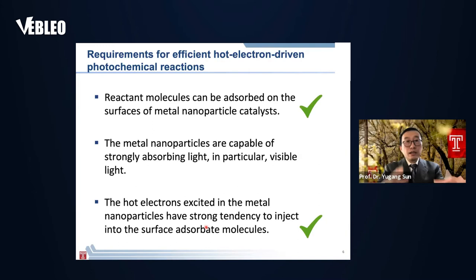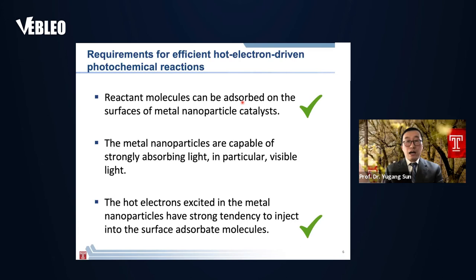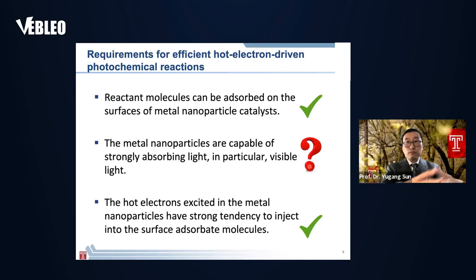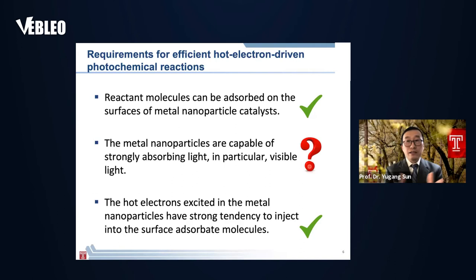According to our previous discussion, the quantum-size metal nanoparticles can fulfill the first and third requirements, since we can choose any metal nanoparticle — many transition metal nanoparticles are good catalysts with good adsorption properties for interesting catalytic reactions, and the quantum size benefits hot electron injection. But the challenge is that when we reduce the particle size to the 2 to 10 nanometer region, the light absorption power in the metal nanoparticles becomes low. This is a significant challenge.